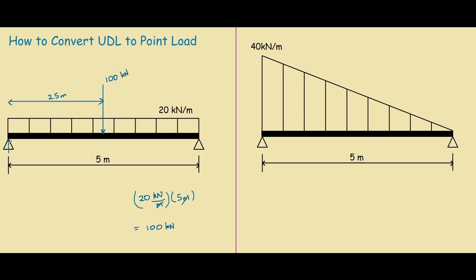So over here we have one support reaction, and over here we have one support reaction. And we know that it's just 100 divided by 2, so 50 kN and 50 kN.